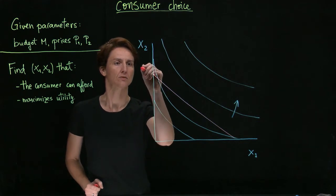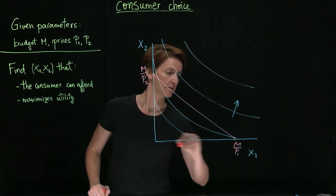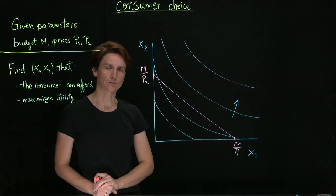So this intersection was M over P2, and this was M over P1, and the slope was the ratio of prices.